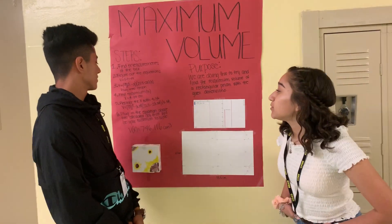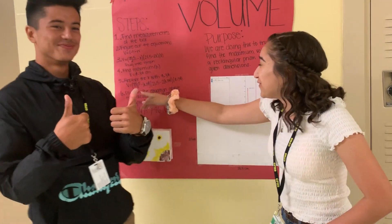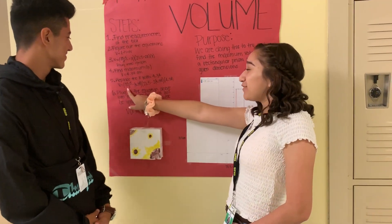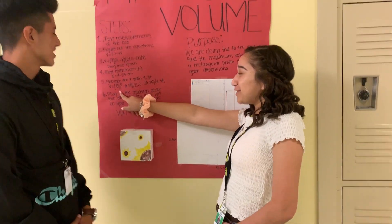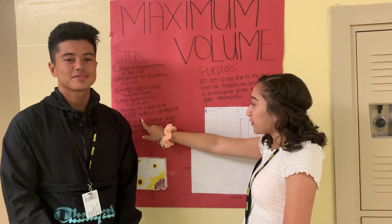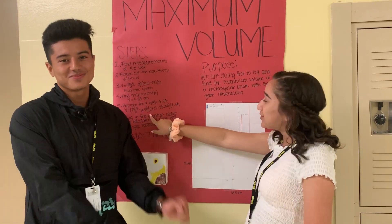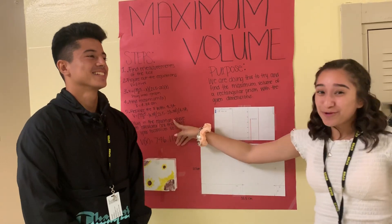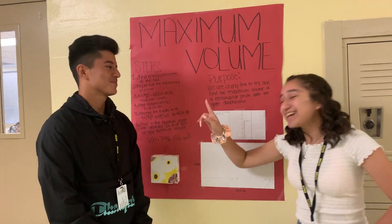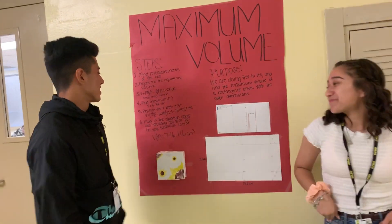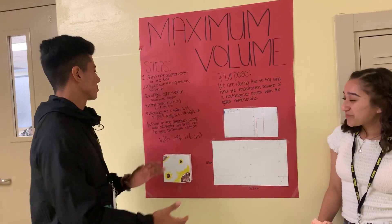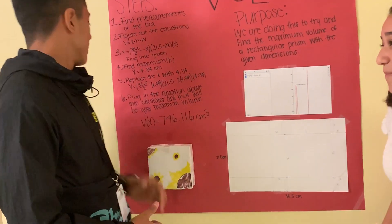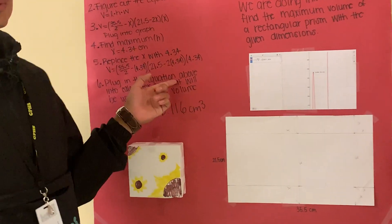Then we're going to replace all the x's with 4.34, which gives us the equation 35.5 divided by 2 minus 4.34, times 21.5 minus 2 times 4.34, times 4.34. We plug this equation into the calculator, and that will be your maximum volume.